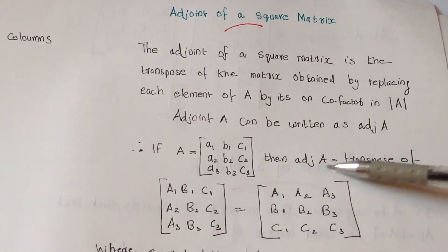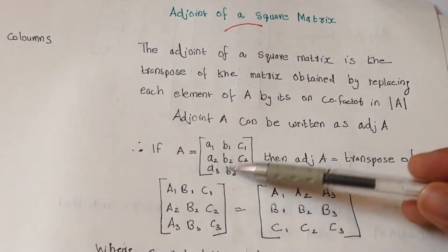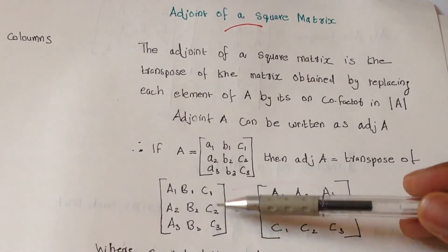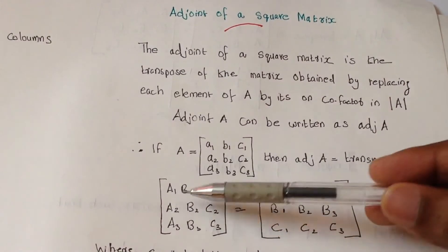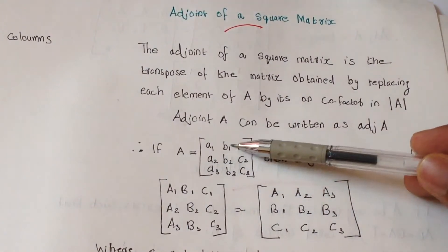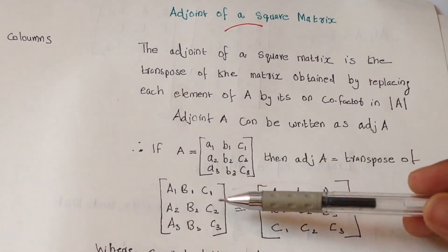then adjoint A will be the transpose of the cofactors like capital A1 B1 C1, A2 B2 C2, A3 B3 C3. Capital A1 means cofactor of small a1, B1 means cofactor of small b1.